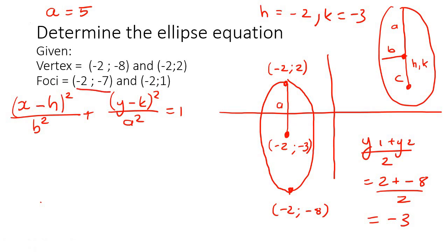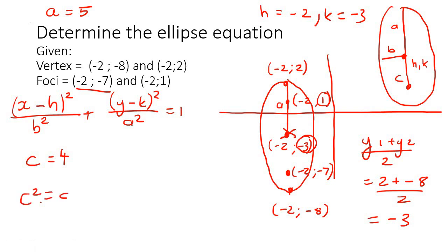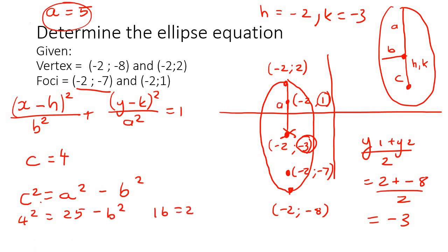Now let's plot the foci. The foci are at (-2, -7) and (-2, 1). The value of c is the length from the center to the focus. Going from negative 3 up to 1 is a length of 4, so c equals 4. Using the formula c squared equals a squared minus b squared: 4 squared equals 25 minus b squared, so 16 equals 25 minus b squared. Solving gives b squared equals 9.